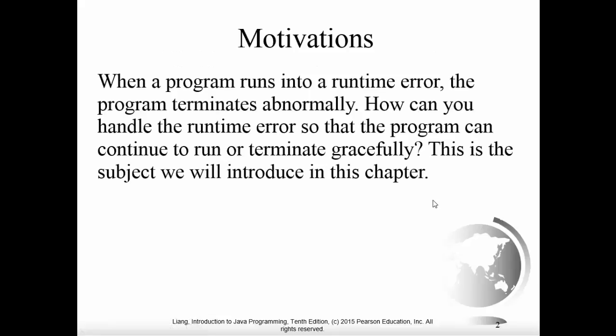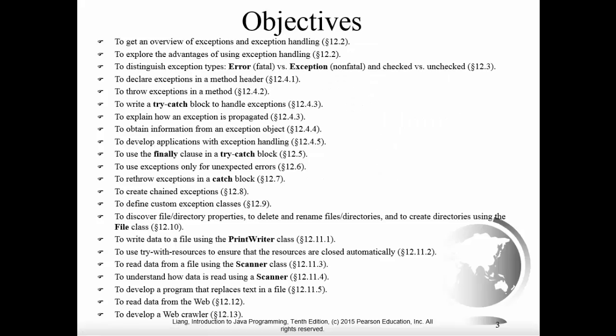When we run into a runtime error — some sort of unexpected condition as our program is executing — it causes a cancellation or an abnormal termination for our user. We need to handle things a little bit better than that. Nobody likes to be using a program that abnormally terminates right in the middle of things. So how can we handle these runtime errors so that we can continue to run or terminate gracefully? That's what we're looking at in this chapter.